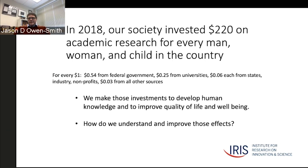In 2018, our society invested $220 on academic research for every man, woman, and child in the country. About 54–55 cents of the dollar came from the federal government; universities' institutional spend amounted to another 25 cents on the dollar, and the rest came from states, industry, non-profits, and other sources combined.